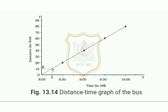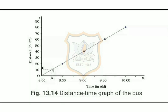Suppose we want to know how much distance the bus had traveled at 8:15 AM. We mark the point corresponding to 8:15 AM on the X-axis — call this point A. We draw a line perpendicular to the X-axis at point A and mark point T where this perpendicular intersects the graph. We then draw a line through T parallel to the X-axis, which intersects the Y-axis at point B. The distance OB on the Y-axis gives the distance in kilometers covered by the bus at 8:15 AM. You can also find the speed of the bus from its distance-time graph.